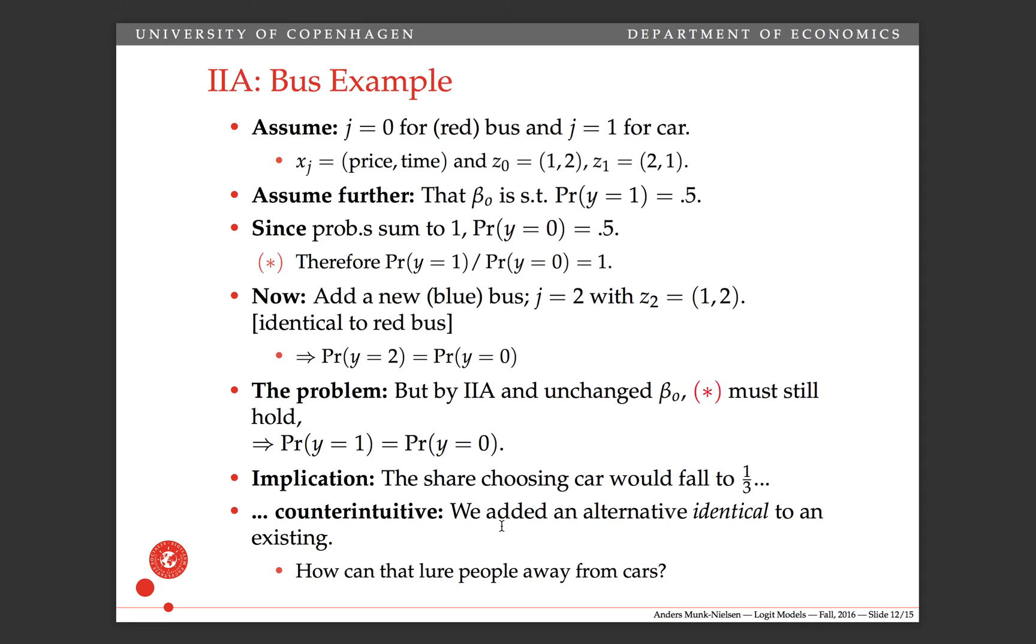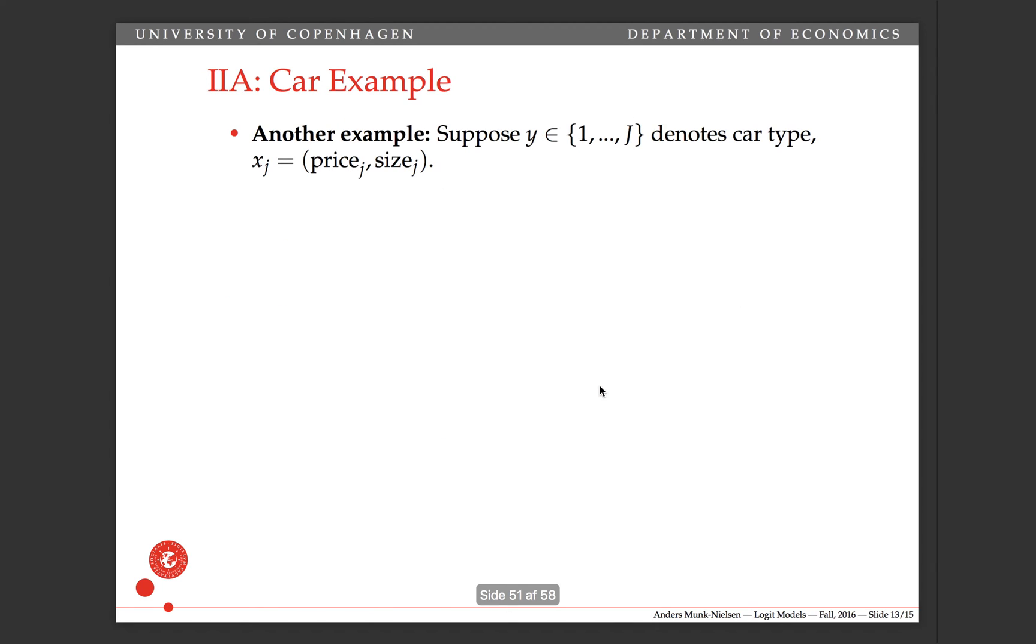So it's counterintuitive that we've added a new alternative, a new choice, the blue bus, that's identical to the existing red bus. How can it lure away people from cars? It should be taking away people from the red bus only. But due to the structure and due to the independence of irrelevant alternatives, that's not how the logit model works. So this is the independence of irrelevant alternatives. And it's a property that we're not so happy about with the logit model. And there are tons of ways of solving it with nesting and so forth.